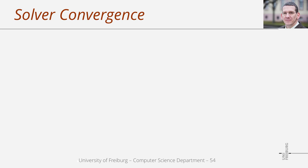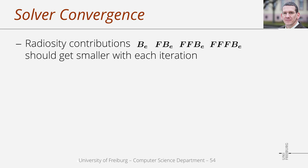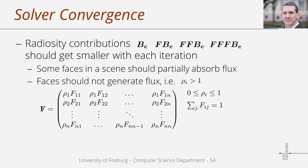The solver converges if the contributions from the Neumann series terms get smaller, which is the case if at least some patches partially absorb incident flux and none amplify it. The reflectance rho should be smaller or equal to 1 for all patches, and at least for some patches rho should be smaller than 1. For smaller reflectance coefficients, the system matrix (I - F) gets closer to the identity matrix, which improves solver convergence. That is it about the second part of the presentation of the radiosity concept. Thanks for your attention.